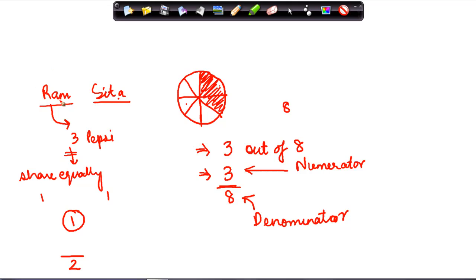How much would Ram get? Ram would get one part out of this two. So he gets one part out of two. So he gets half of this thing. What is remaining is another half part which goes to Sita. So fractions are basically meant to find out a proportion of the total thing.